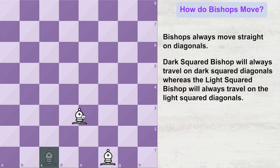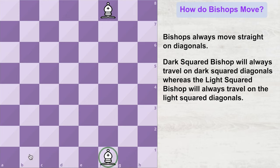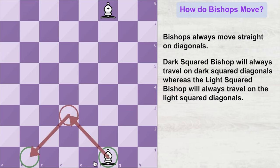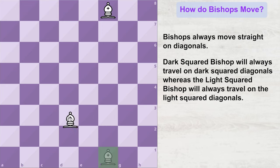Let's see this in practicality. Now let's say this bishop wants to travel to this square. It can first come to this intermediate square and then move to the destination square like this.